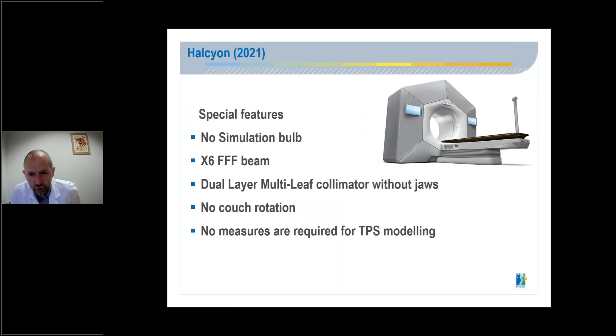What are the special features of Halcyon? There is no simulation bulb. Beam is an FFF. Collimator is a dual layer multi-leaf without jaw. There is no couch rotation. No measures are required for TPS modeling. The system is installed with golden data inserted into the beam configuration.